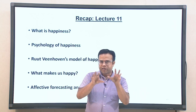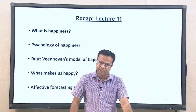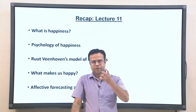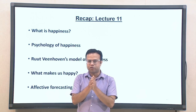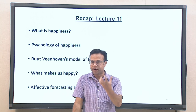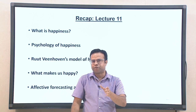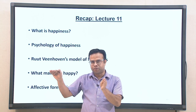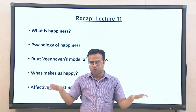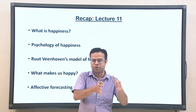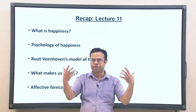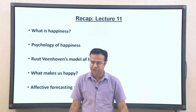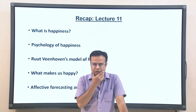Happiness is mostly measured using self-rating scales where people report their own subjective experiences. We also discussed Ruut Veenhoven's model of happiness, which covers different categories associated with quality of life. In that context, life satisfaction is a major component for policy implications, as it reflects how one judges their life as a whole in an enduring way — not just short-term feelings, but a general overall judgment of one's life.